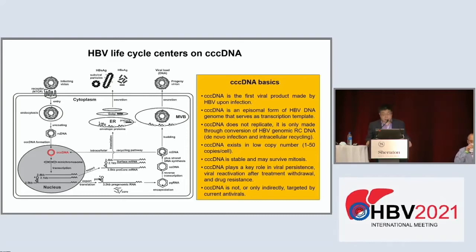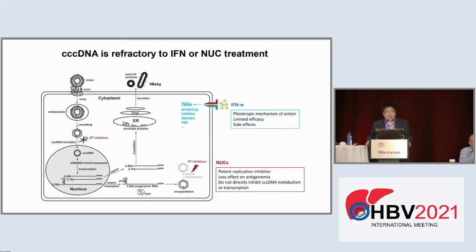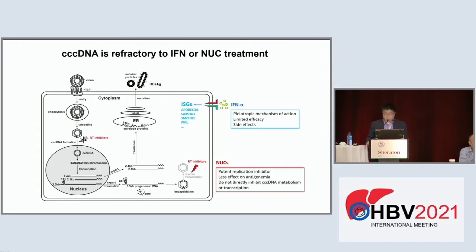Unfortunately, cccDNA is only indirectly targeted by current approved antivirals, including interferon and nucleos(t)ide analogs. Interferon has multiple functions to control virus infection, but it's not specific for HBV, so its antiviral efficacy is limited, and side effects limit its use in hepatitis B patients. Nucleos(t)ide analogs — replication inhibitors targeting reverse transcription activity of the viral polymerase — have less effect on antigenemia, especially surface antigen, and don't directly inhibit cccDNA replication, metabolism, or transcription.